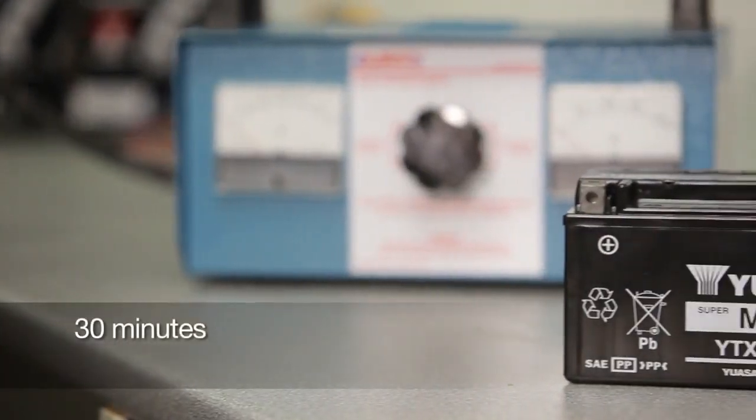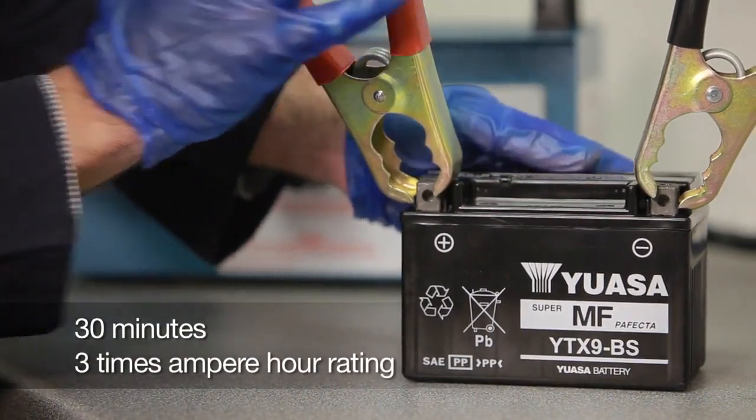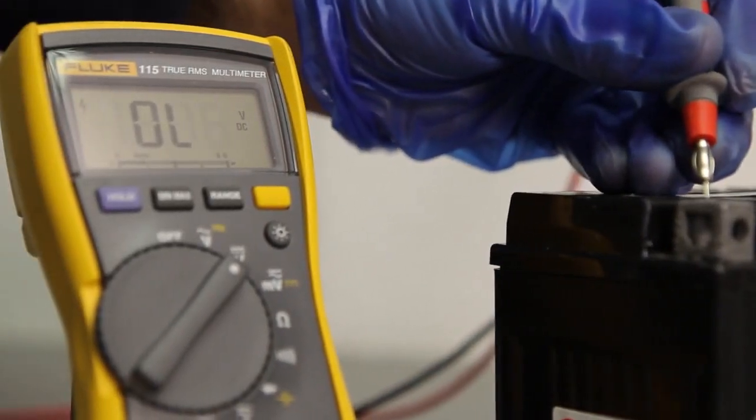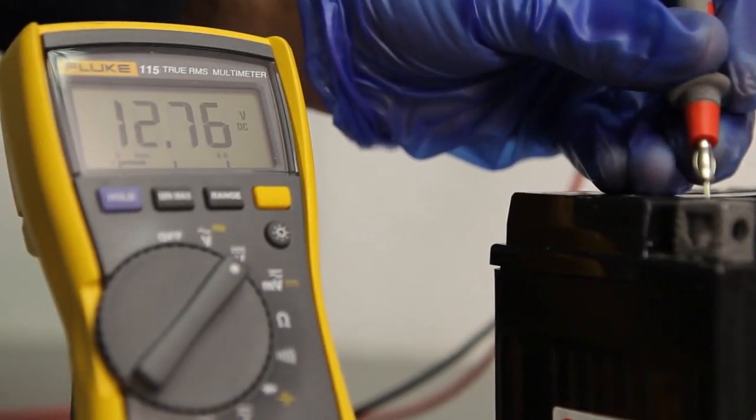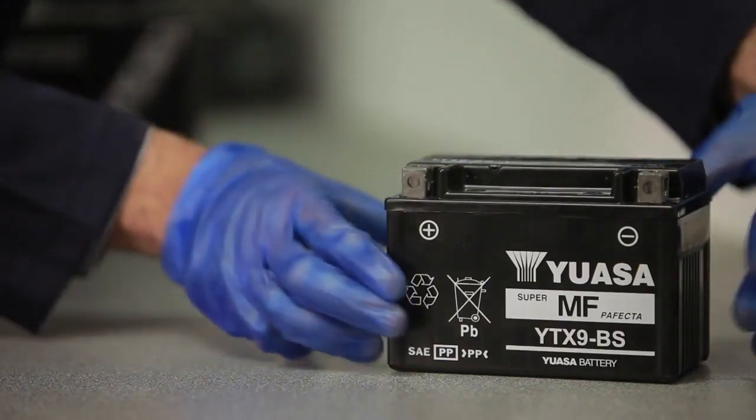Let the battery stand for at least 30 minutes, then load test it at 3 times its ampere hour rating for 15 seconds, or use an automatic battery tester to determine the battery's condition and check the voltage. This should be a minimum of 12.6 volts on a 12-volt battery. The battery is then ready to be fitted.